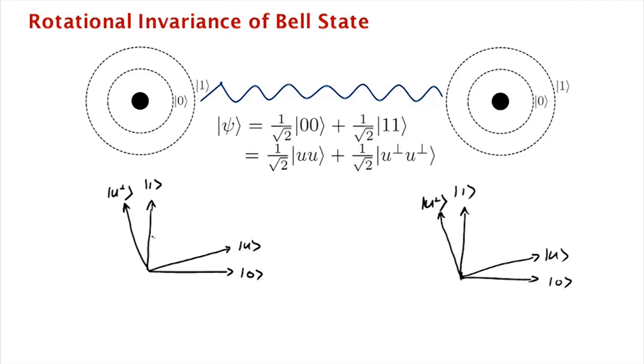What it means is that if you were to measure the first qubit in this u, u perp basis, the probability that the outcome is u is exactly a half, but if you were to see the outcome as u, then a measurement of the second qubit will definitely also yield the outcome u if you measure again in the u, u perp basis.